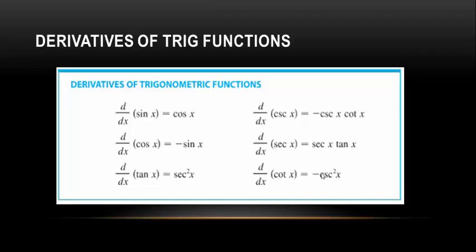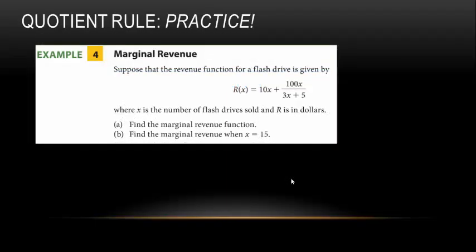Here is the complete list of trig derivatives: the derivative of sin(x) is cos(x), the derivative of cos(x) is −sin(x), the derivative of tan(x) is sec²(x), the derivative of csc(x) is −csc(x)·cot(x), the derivative of sec(x) is sec(x)·tan(x), and the derivative of cot(x) is −csc²(x). You can prove these using the reciprocal identities: csc = 1/sin, sec = 1/cos, cot = cos/sin.